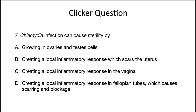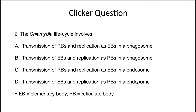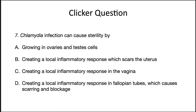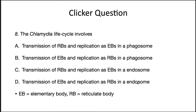Let's see if you followed along. Chlamydia infection can cause sterility by — the answer is D — creating a local inflammatory response in the fallopian tubes which causes scarring and blockage. And the chlamydia life cycle involves — the answer is D — transmission of elementary bodies and replication as reticulate bodies in an endosome.